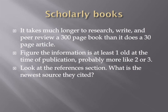Scholarly books are peer-reviewed just like scholarly articles. The difference is that it takes much longer to write and then peer review a 300-page book than it does a 30-page article. So information in scholarly books is generally anywhere from 1 to 3 years old by the time the book is published. Again, you can get a more accurate picture of when the author finished writing the book by looking at the most recent date of the citations in the reference section or bibliography.